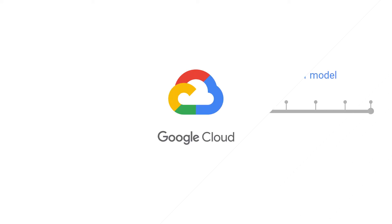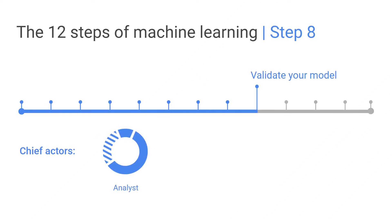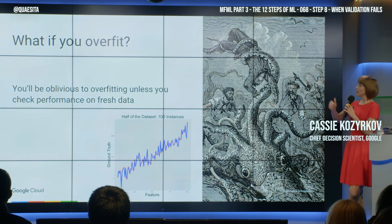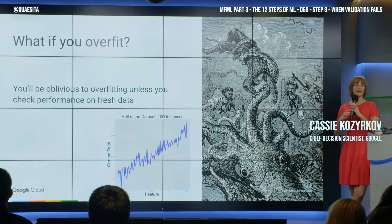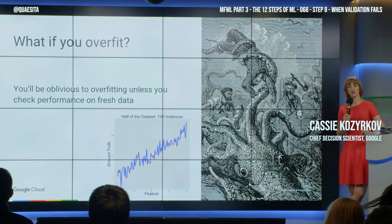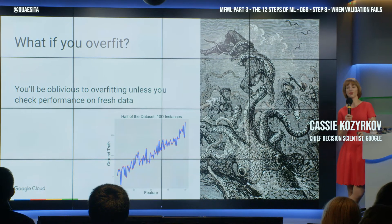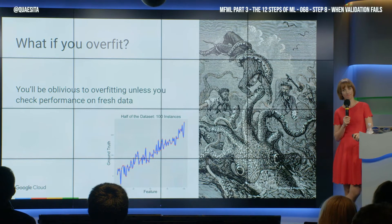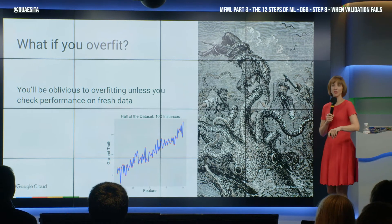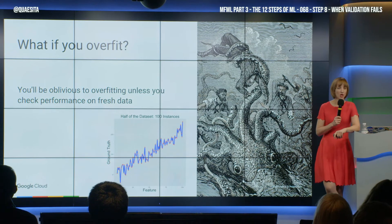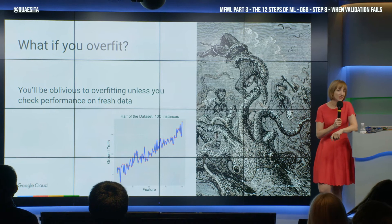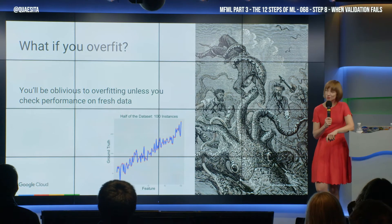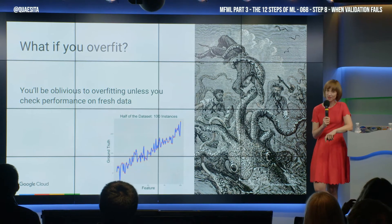Next, avoid bias remorse with validation. What if you got to this stage and you have overfitting? Let me just tell you now — you will get to this stage and you will have overfitting.